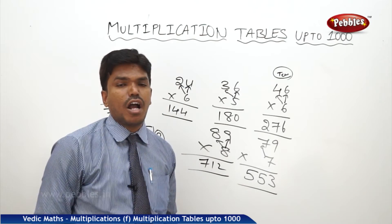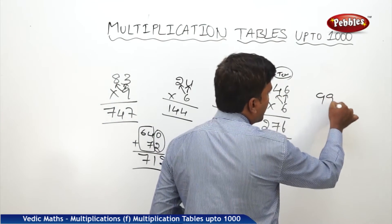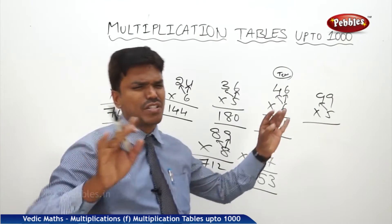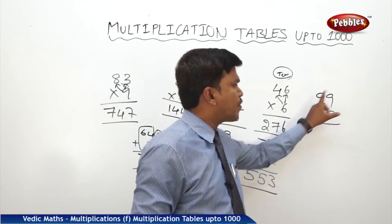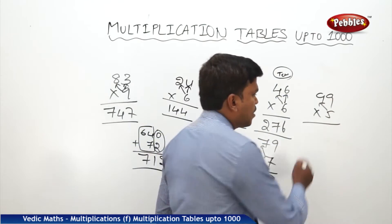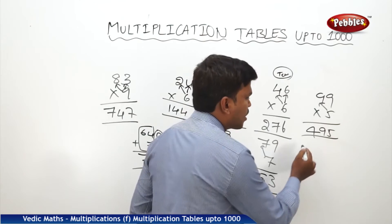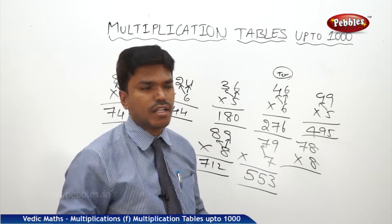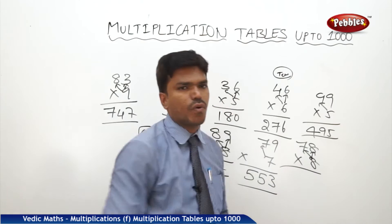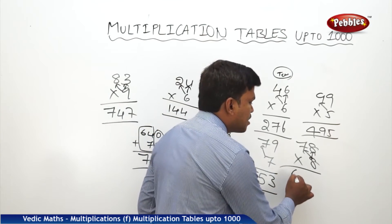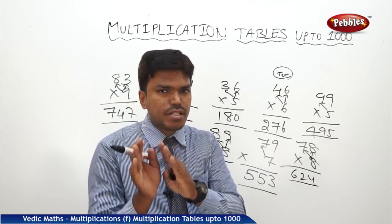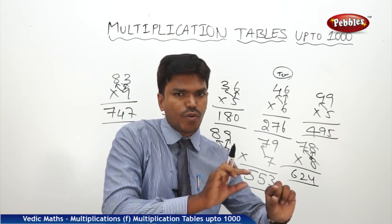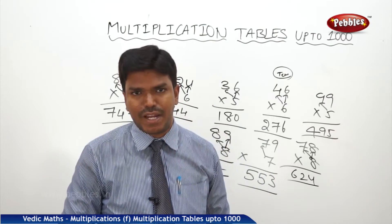Like that we can calculate. You tell me this time, what is 99 five times? Simply you have to say 450 plus 45. 450 plus 45 is 495. Similarly, 78 eight times - 560 plus 64. 560 plus 64 is how much? Exactly 624. 0 plus 4 will get 4 as it is. Now 56 plus 6 is how much? 62. 624. Like that you need to calculate in the mind.